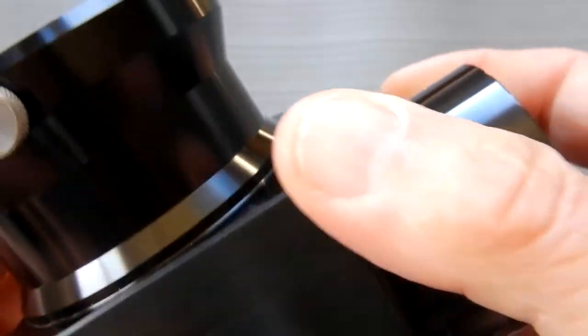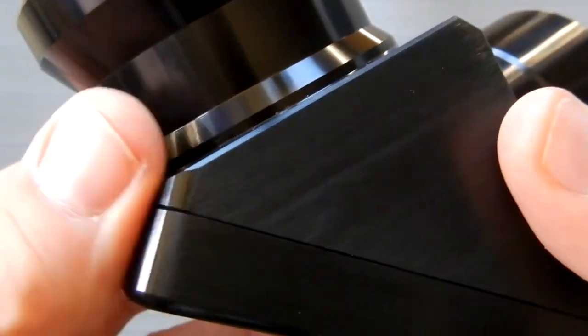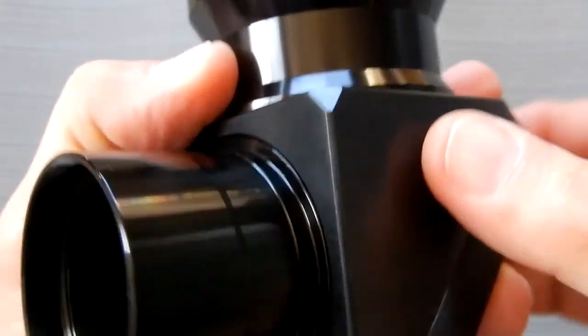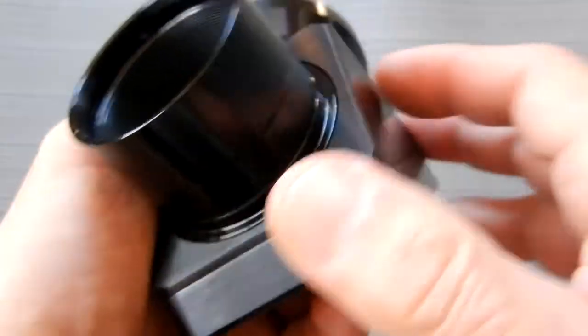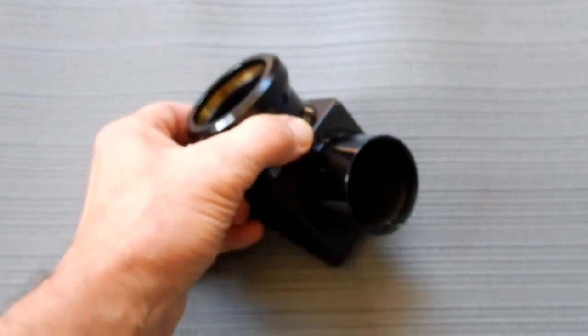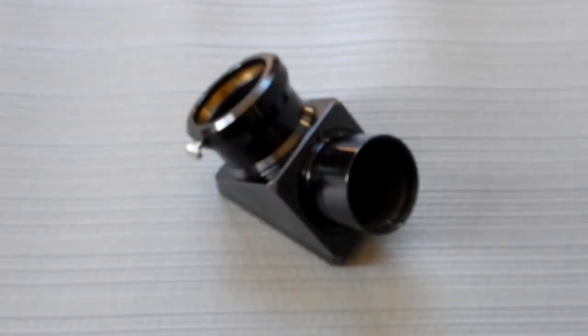You'll notice the corners—no sharp corners. These are radiused, these have been knocked down. Precision that you've come to expect from Astrophysics.